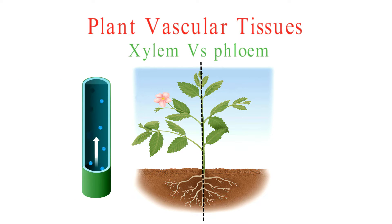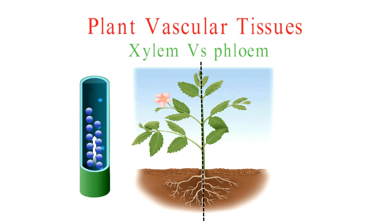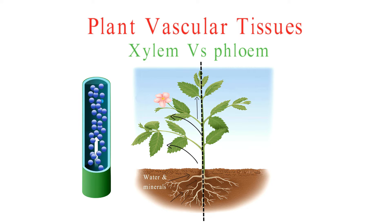Xylem is like the plant's water highway. It primarily transports water and minerals from the roots to the rest of the plant. These tissues are made up of dead cells with lignin walls, creating a sturdy and rigid structure. This structural feature helps support the plant.